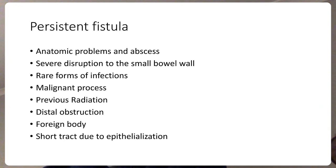As mentioned, if distal obstruction is found on CT scan with oral contrast, it will usually need to be addressed surgically. The presence of a foreign body — though unusual — can occur, and a CT scan will identify it, meaning we will have to remove it. Finally, when the fistula has a very short tract — for example, if a loop of small bowel sits directly under the skin through an incisional hernia — the entire tract becomes epithelialized and will not heal without surgical intervention, though this is rare.